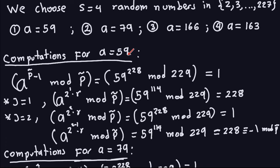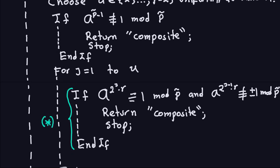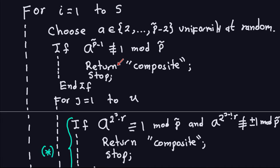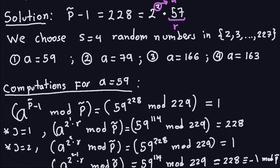Let's look at the first a = 59. The first thing I have to do is compute a to the p̂ minus 1 modulo p̂. If that is not equal to 1, then I say it's composite — that's exactly what the algorithm says. So 59 to the 228 modulo 229 — if you actually do this computation using a computer or Java — you're going to get 1. That means we don't go into that first if loop; we're going to have to go into the second if loop.